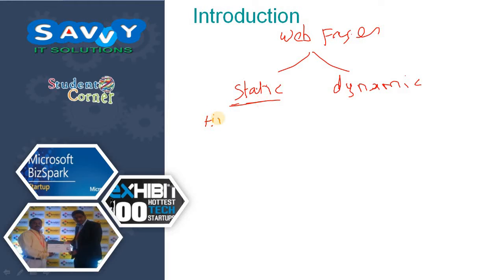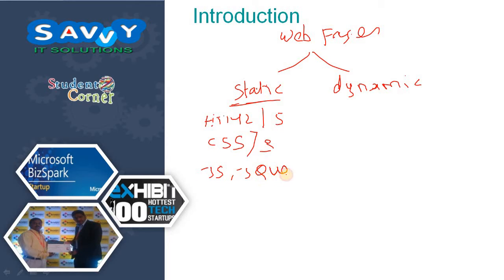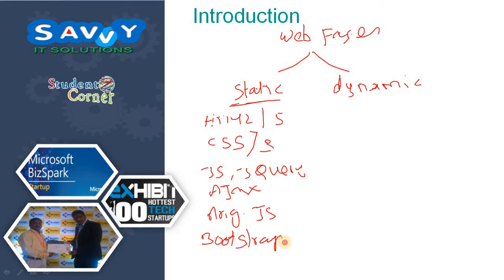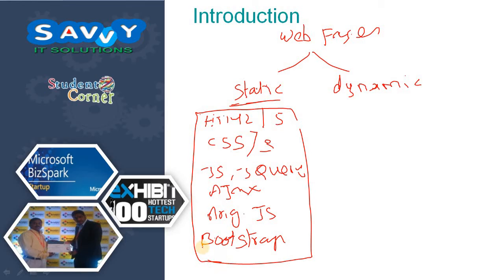When developing static web applications, we need to know HTML up to HTML5, CSS (Cascading Style Sheets) up to version 3, JavaScript, jQuery, Ajax, AngularJS, and Bootstrap. If you know all these things, you can develop static websites on your own.